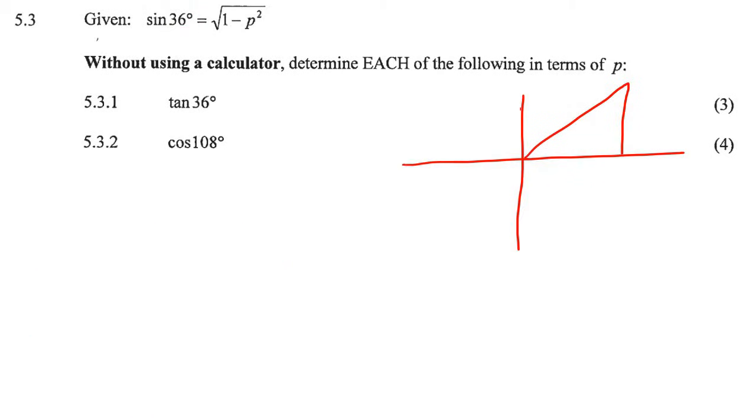Now what I like to do is I just put a little 1 over here, because I know that sin is opposite over hypotenuse, or some students prefer y over r. So that means my opposite is, and my angle 36 is here. So I can say 1 minus square root of 1 minus p squared, and I can put my 1 there.